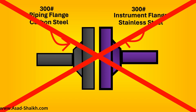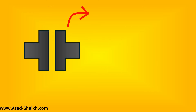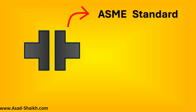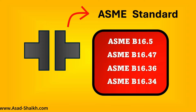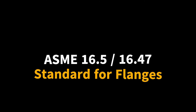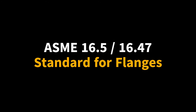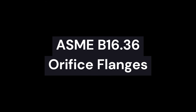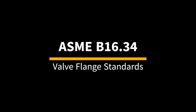By the end of the video you will agree with this understanding. The ratings come from ASME standards, which are divided into various categories: for example, 16.5 and 16.47 are used for flanges, 16.36 is used for orifice flanges, and 16.34 is used for valves, etc.